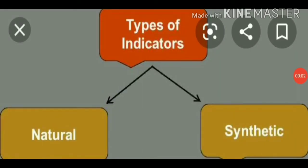We have two types of indicators. Natural indicators are those obtained from naturally occurring substances — like litmus, turmeric, and china rose. Synthetic indicators are those made in the laboratory, also called man-made indicators. For example, we have phenolphthalein and methyl orange. These are examples of synthetic indicators.